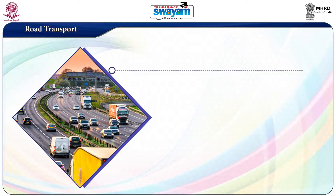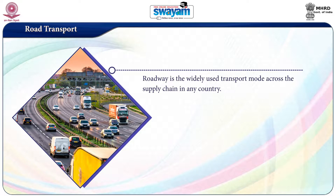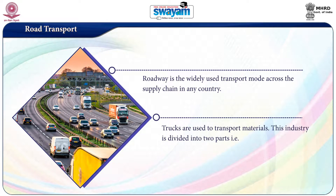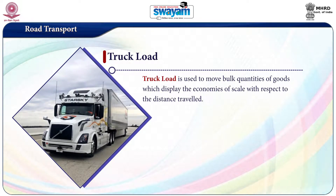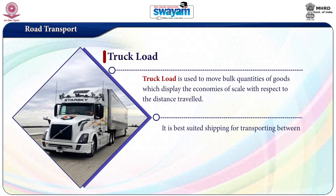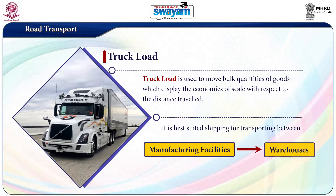Road transport: Roadways is the widely used transport mode across the supply chain in any country. Trucks are used to transport materials. This industry is divided into two parts: the first is truck load and the second is less than truck load. Truck load is used to move bulk quantities of goods, which displays the economies of scale with respect to the distance travelled. It is best suited for shipping products between manufacturing facilities and warehouses.